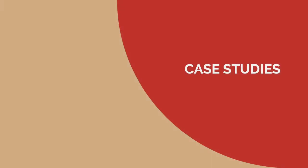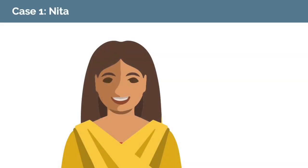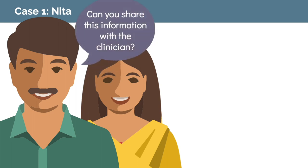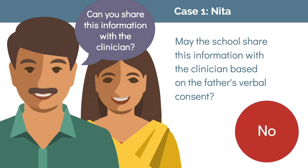Now let's review some case studies showing how FERPA might apply in a school health setting. We will be reviewing the cases of Nita, Huang, and Sam. Nita is 11 and has been receiving therapy from a clinician at a school-based health center that is part of the local children's hospital. Their records are subject to HIPAA. Nita's father wants her school to share her attendance, grades, and results from her most recent IEP evaluation with the school-based health center clinician. May the school share this information based on the father's verbal consent? The answer is no. The information sought is in the education record and protected by FERPA. FERPA does require a FERPA-compliant signed release in order to share records, and no exception would allow disclosure in this case without a release.